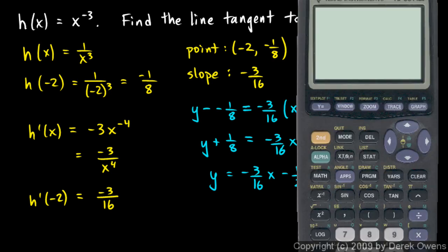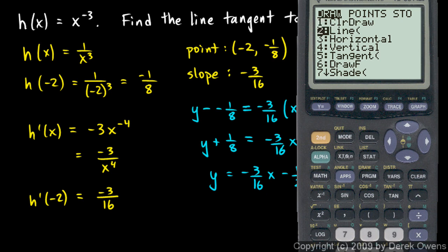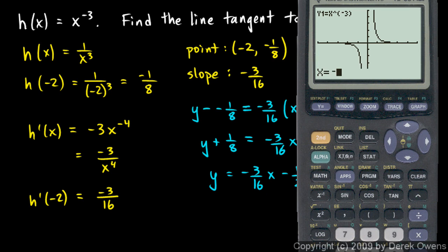Let's check this on the calculator. We type in y equals x to the power of negative 3, that's our function, and graph it. We're trying to find the line tangent to this graph at x equals negative 2. Hitting Draw — second on the program key — and option 5 is tangent. We draw the tangent at negative 2 and hit enter. It draws the tangent line and tells us the equation. We're hoping it's negative 3 sixteenths x minus 1 half. The calculator gives negative 0.1875x plus negative 1 half, which matches what we got doing the calculus.